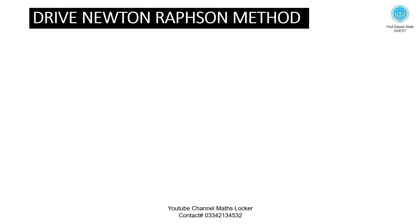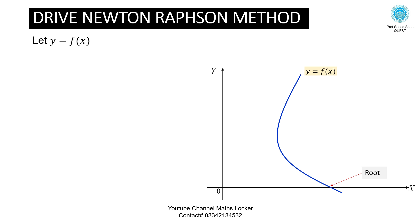Now we derive the Newton's method. Let y = f(x) be a curve placed in a Cartesian plane. The root is where the graph cuts the x-axis. Taking a point A having coordinates (x₀, y₀) on the curve.